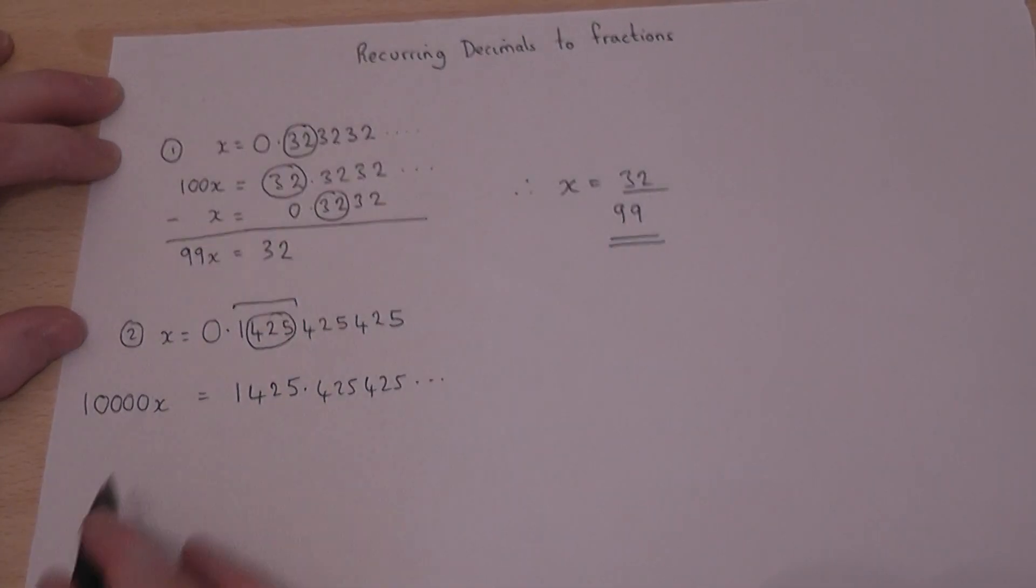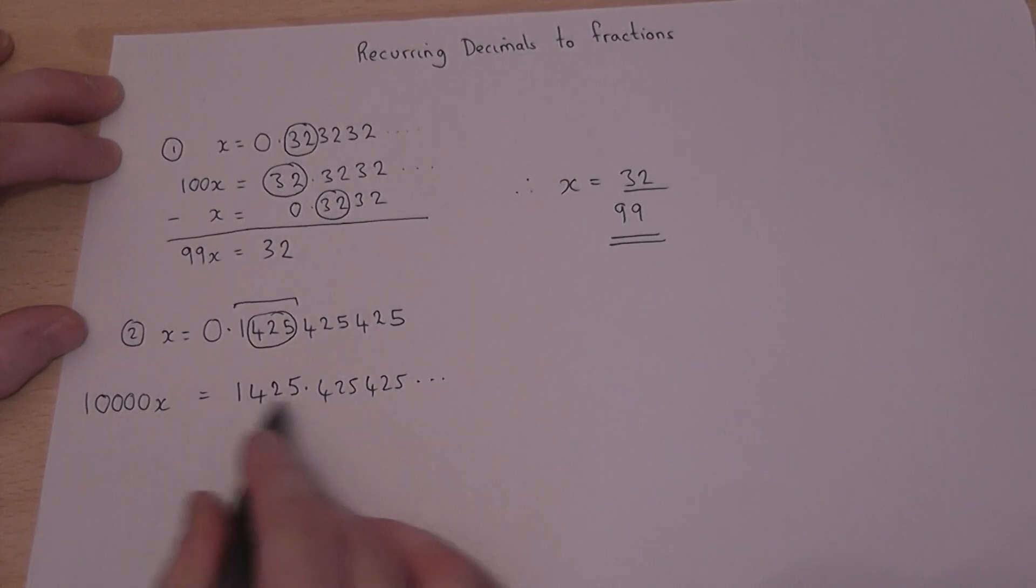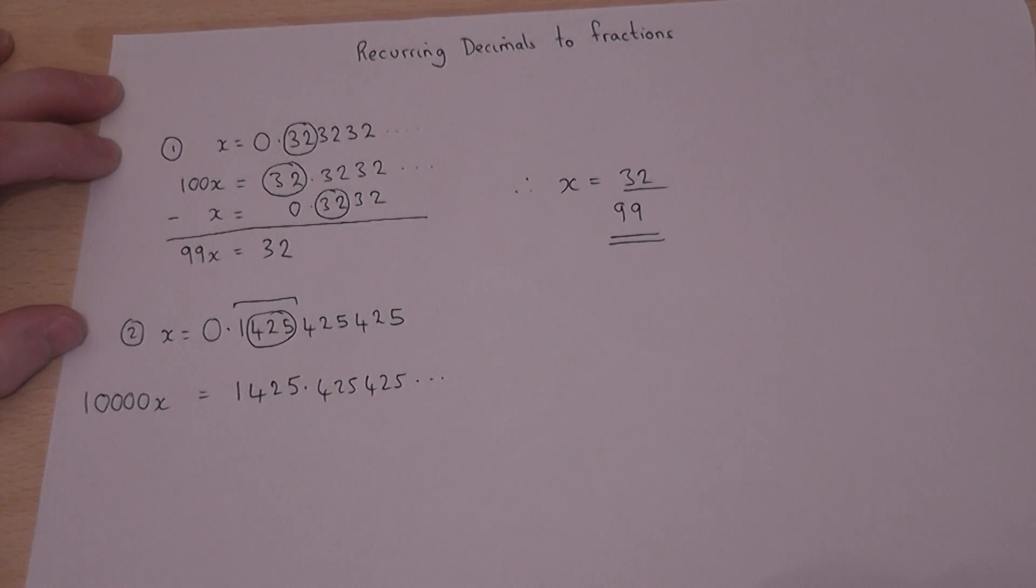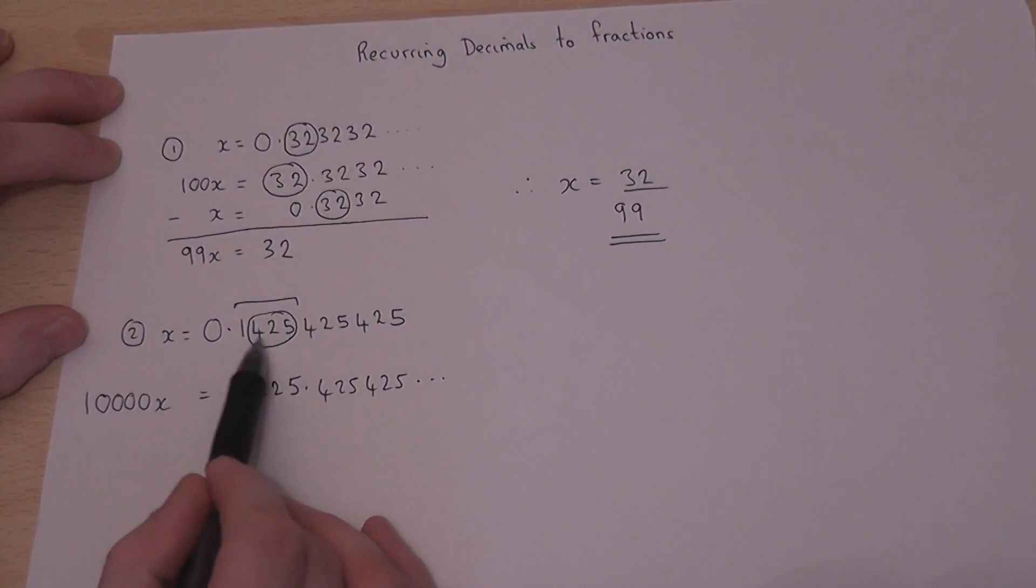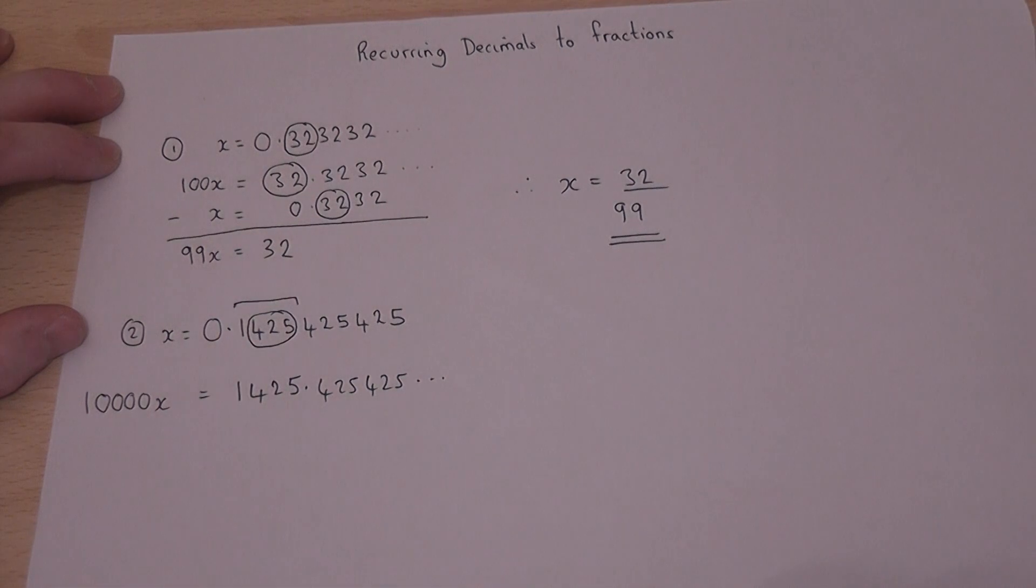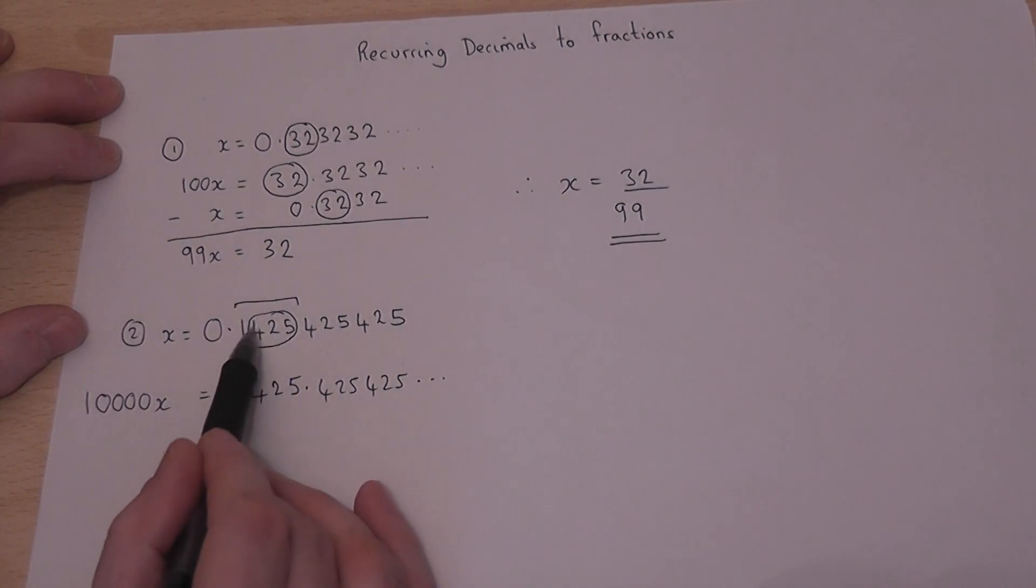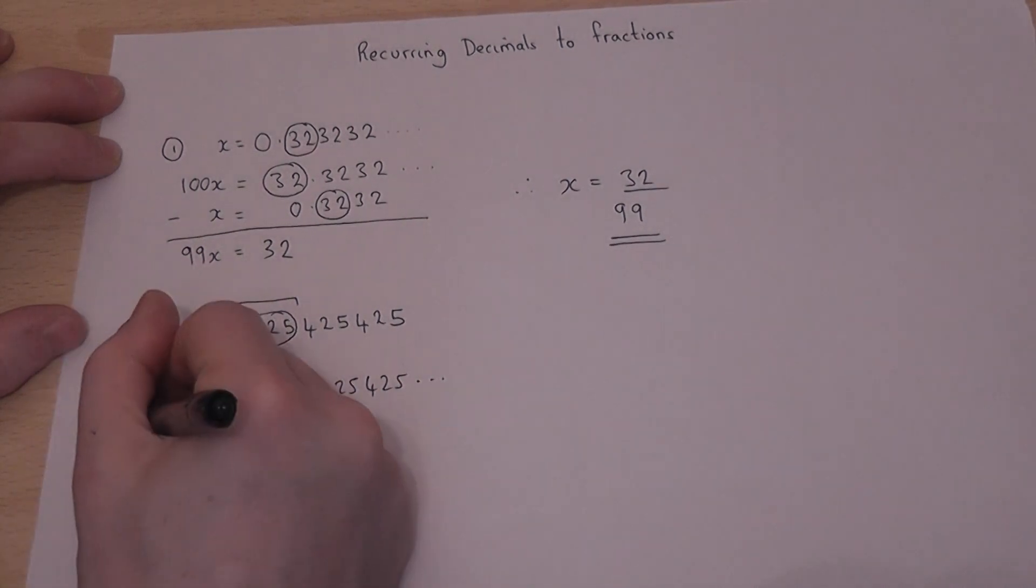Now then, if I write down x below it, then I'll have a 1425. It won't match off. But if I then times by enough tens to get the circle point just to the left of the point, so 5 times by 10, so if I write down 10x.